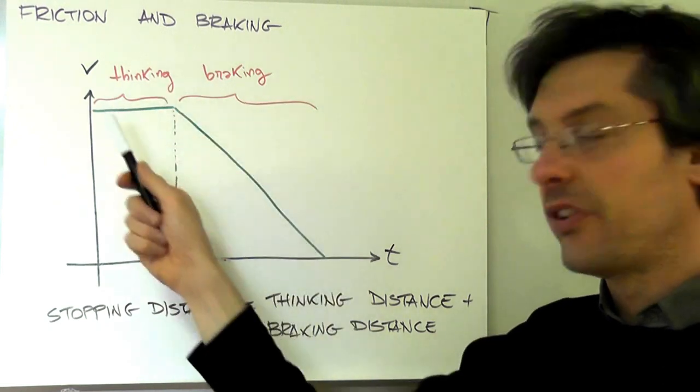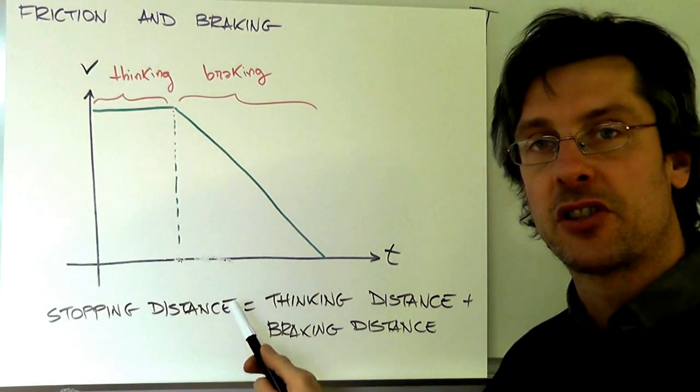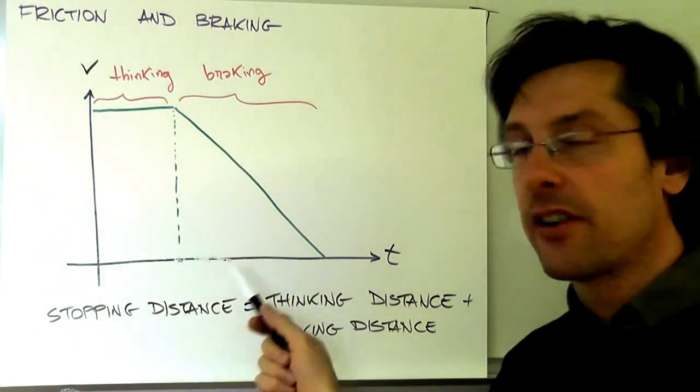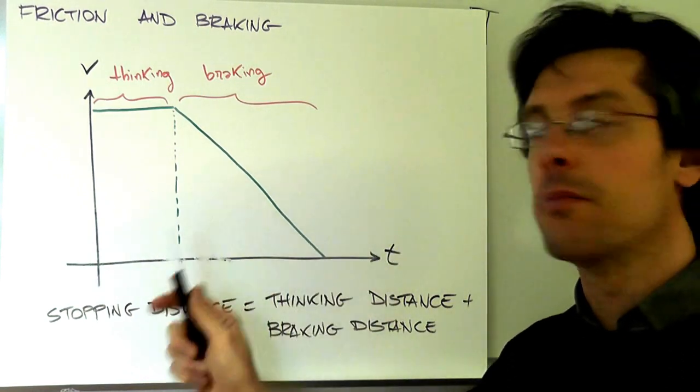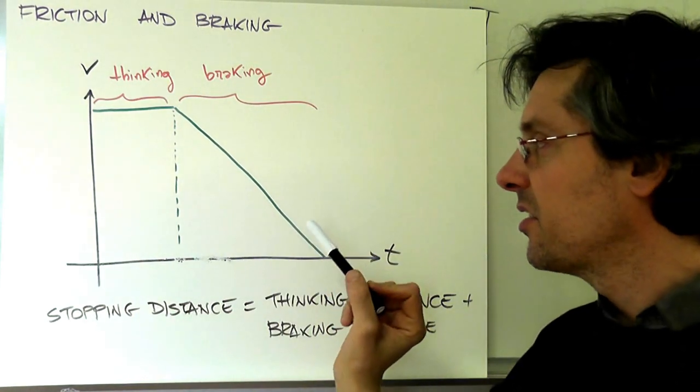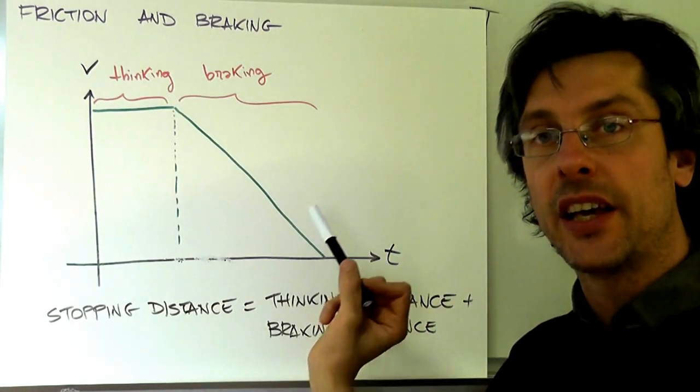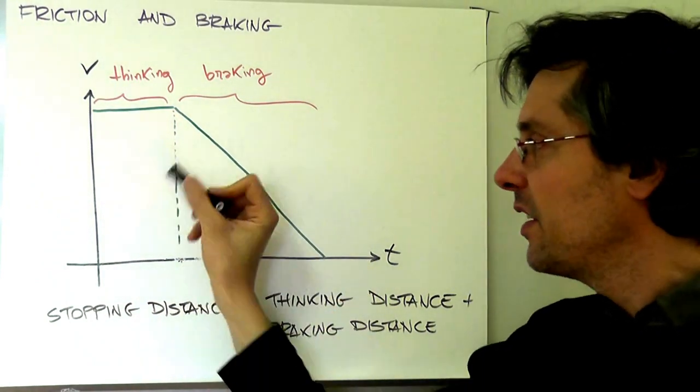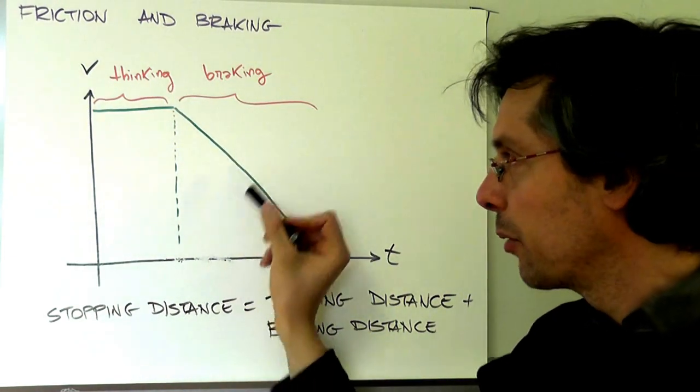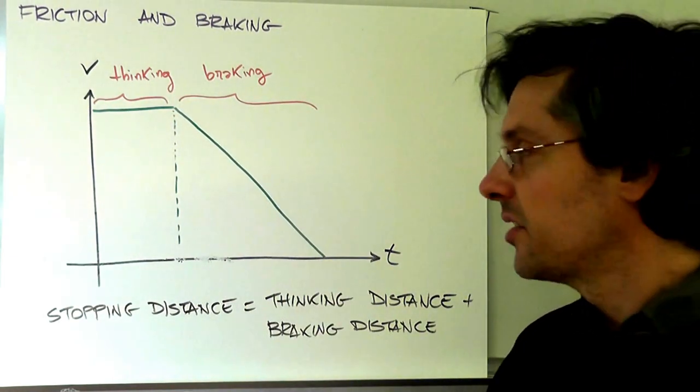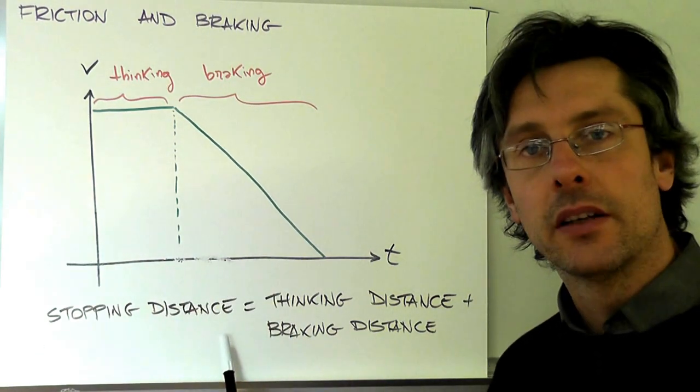Together we call this stopping time, and related to that we have a stopping distance. If you have a graph like this, it's very easy to find the stopping distance, because the distance can be derived from a speed-time graph by looking at the area under the graph. This area will be the thinking distance. This area will be the braking distance. And these two summed together will be the stopping distance.